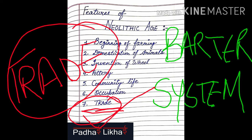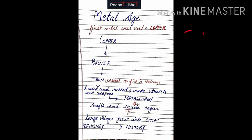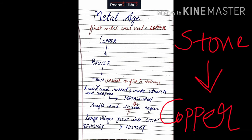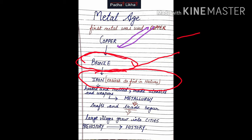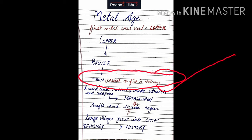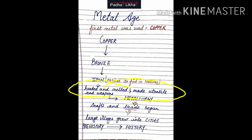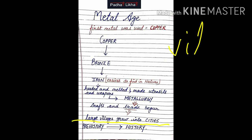After the Neolithic Age, the Metal Age began. People moved away from stone tools and started using copper — the first metal they used — followed by bronze and then iron. Iron was the easiest mineral to find in nature. They learned to heat and melt metals, making utensils and weapons through a method known as metallurgy. Through metallurgy, crafts and trade developed further. Large villages grew into cities, and this marked the end of prehistory and the beginning of history.